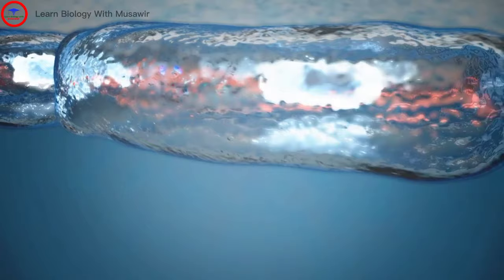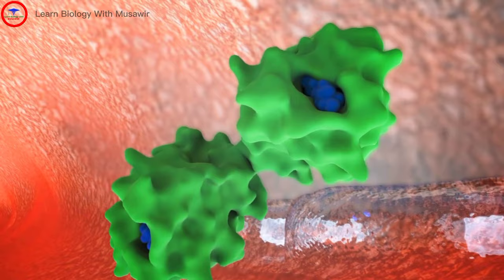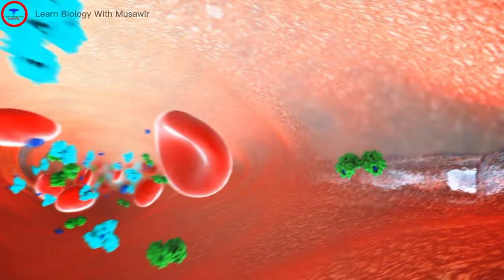The testosterone attached to SHBG is not able to enter the cell due to the strong bond between the two molecules and is not considered bioavailable. Testosterone attached to SHBG is basically trapped within the bloodstream and remains there until it is broken down by the body.